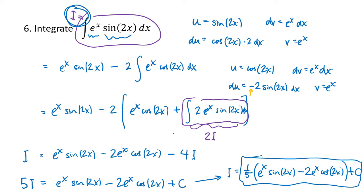This is an example where we had to use parts multiple times — similar to problem 3 — but where we end up getting the same integral back and have to solve for it algebraically. This is the kind of thing that happens when you have an exponential function multiplied by a trig function. So when you recognize that structure, this is the approach to take.